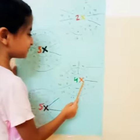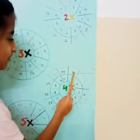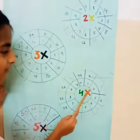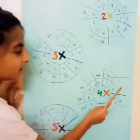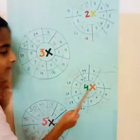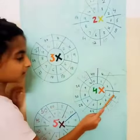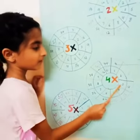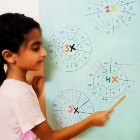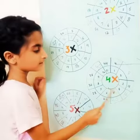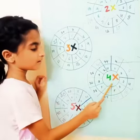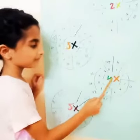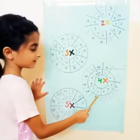Table of 4. 4 1's are 4, 4 2's are 8, 4 3's are 12, 4 4's are 16, 4 5's are 20, 4 6's are 24.